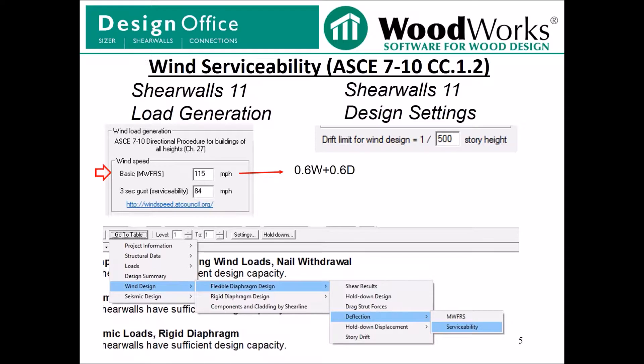There is the additional input of the 3-second gust serviceability wind speed. To determine what input is appropriate, you should review the commentary. The wind speed maps in the commentary are intended to address shorter return period wind events than the return period associated with the main wind force-resisting system. The load case associated with this input is W_a + D, where W_a is the wind load based on serviceability wind speeds. The program does not recalculate wind loads based on the lower limit. Instead, it determines a factor using the following equation, which is used to adjust the loads for the purpose of checking wind serviceability.